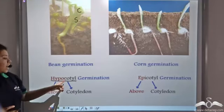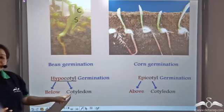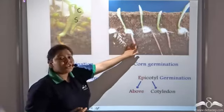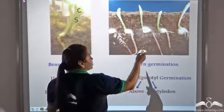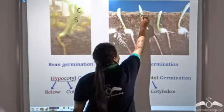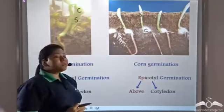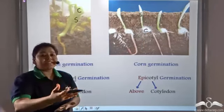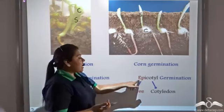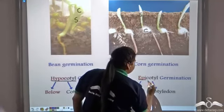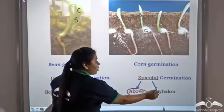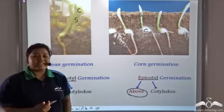'Hypo' means below and 'cotyl' comes from the word cotyledon. In case of corn germination, this is the cotyledon and this is the shoot. So the shoot is above the cotyledon, and this type of germination is known as epicotyl germination. 'Epi' means above and 'cotyl' comes from the word cotyledon.